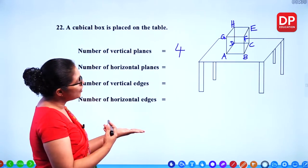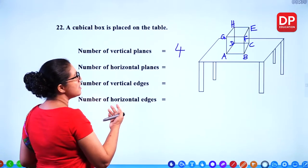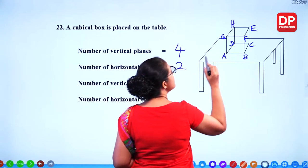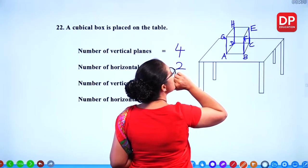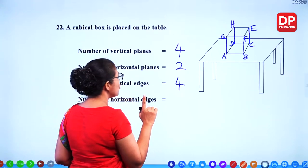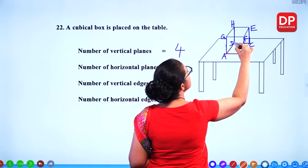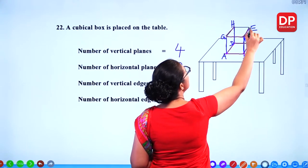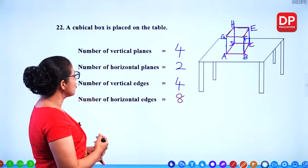The number of horizontal edges: AB, BC, CD, AD on the bottom face — four edges — and GH, EF, GF, HE on the top face — four more edges — giving eight horizontal edges in total.